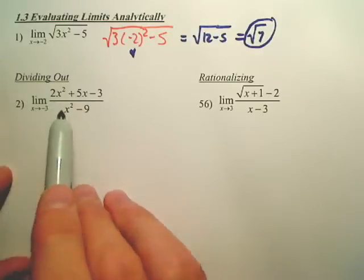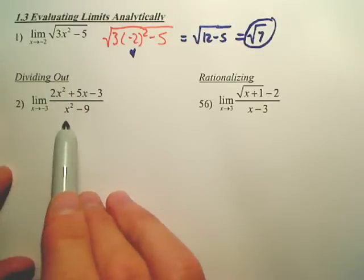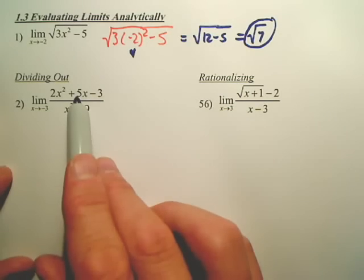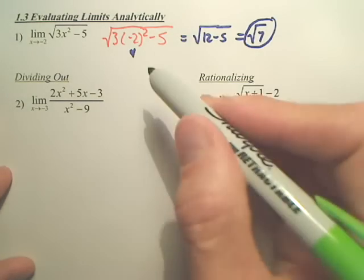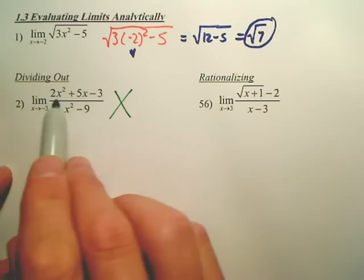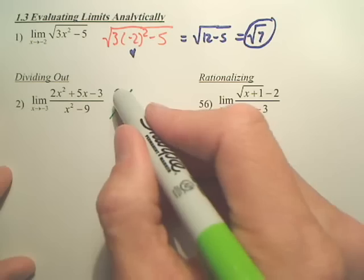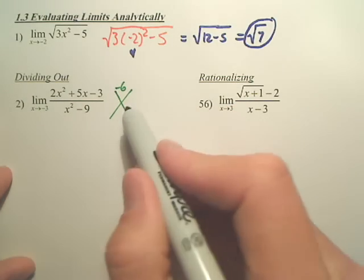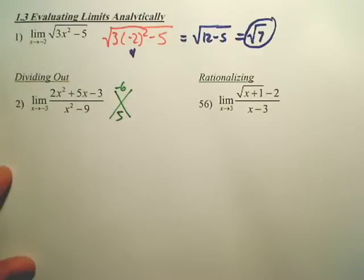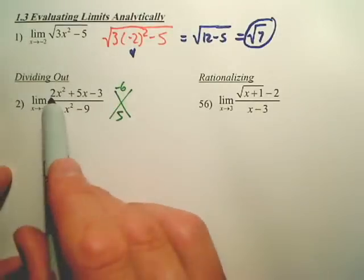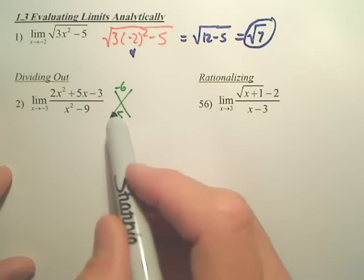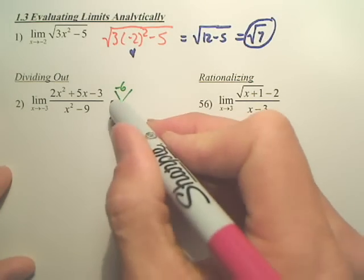So we've got to find the limit in some other manner. This method, the book calls dividing out. Dividing out basically means factor top and bottom to see if something divides or cancels. We're going to factor top, factor bottom. I have a certain way of factoring these. Here's my way. You multiply the 2 and the negative 3, get negative 6. You put the 5 on the bottom. What two numbers multiply to get negative 6 and add to get 5? 6 and negative 1.